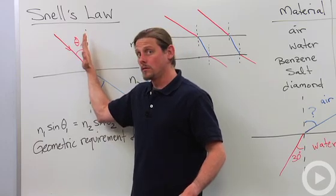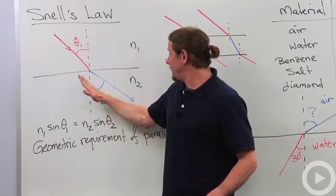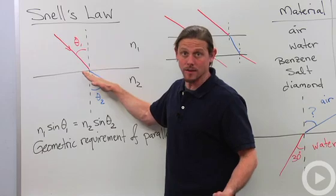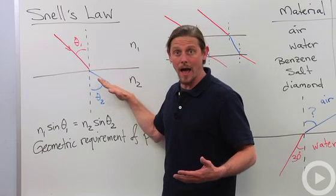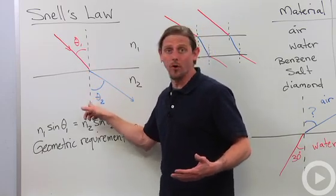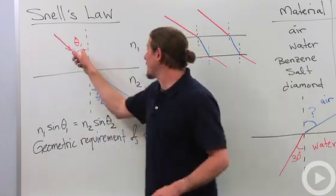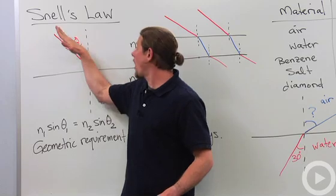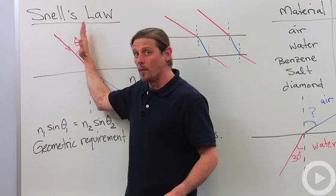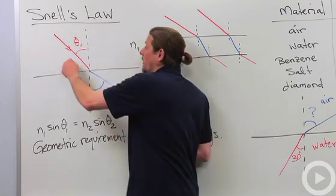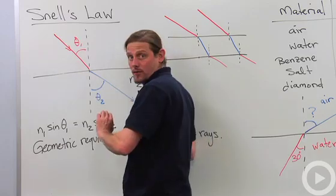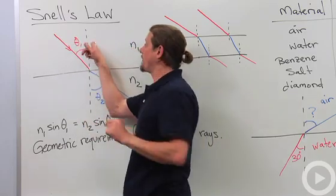We're interested in the relationship between the angle that the incident ray comes in at off of the normal and the angle that the transmitted or refracted ray comes into the new medium at, again off of the normal. I can't emphasize enough how important it is to recognize that these angles are measured off of the normal.